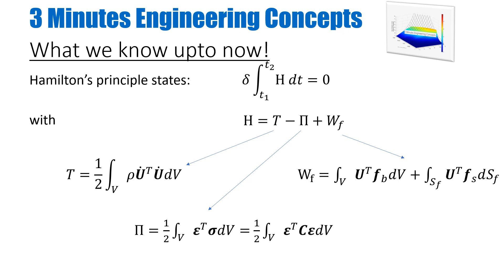From our previous videos we also know Hamilton's principle, given by this relationship here, where H is the Hamilton's function. It is denoted by the sum of all the energies in the system — my kinetic energy, my potential energy (which is strain energy in this case), and all the work done by different forces acting onto it. The relationship for kinetic energy is the basic physics expression: half rho times velocity squared times the volume.